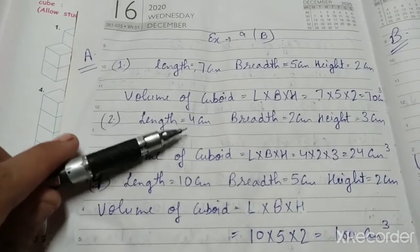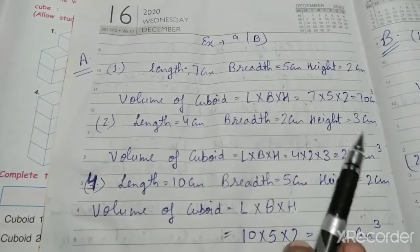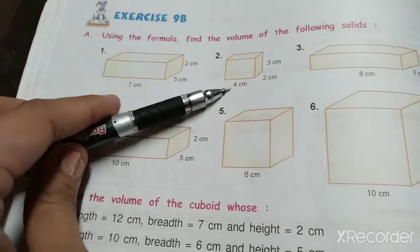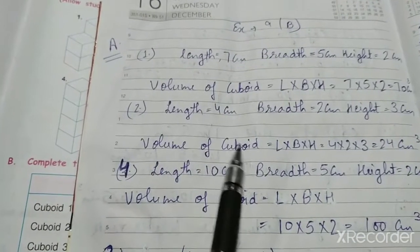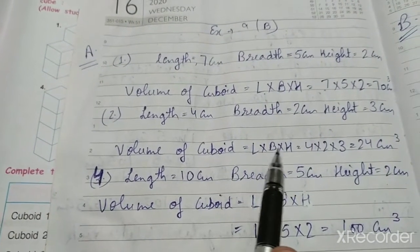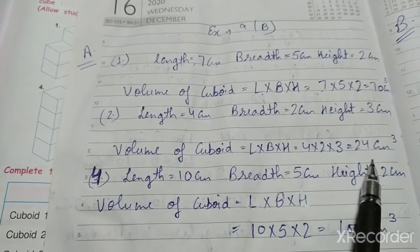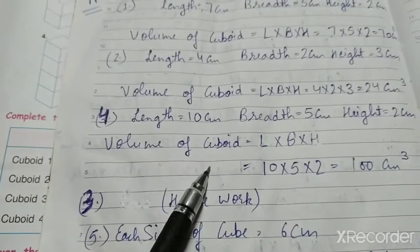For the next question: length is 4 cm, breadth is 2 cm, and height is 3 cm. We can clearly see the length, breadth, and height. Volume of cuboid = L × B × H. So 4 × 2 × 3 = 24 cm³.